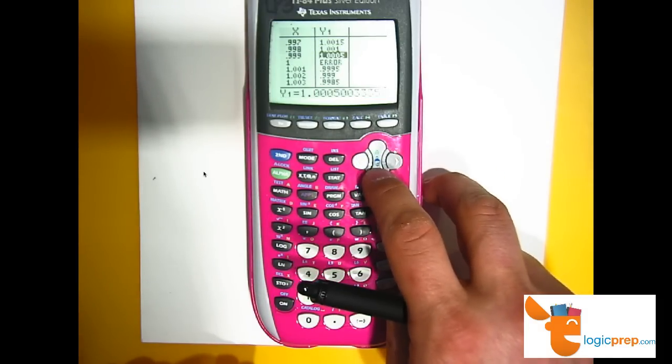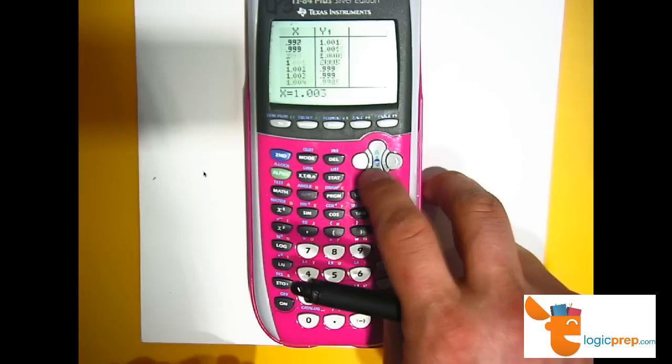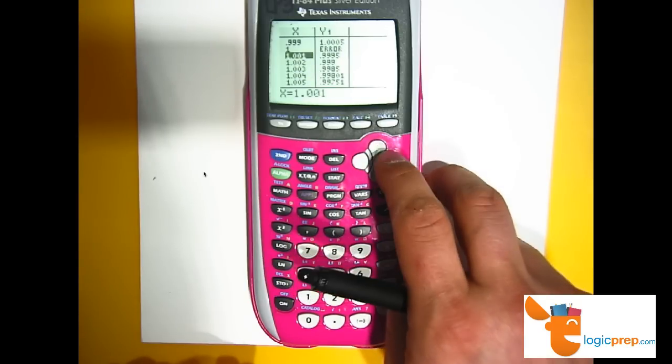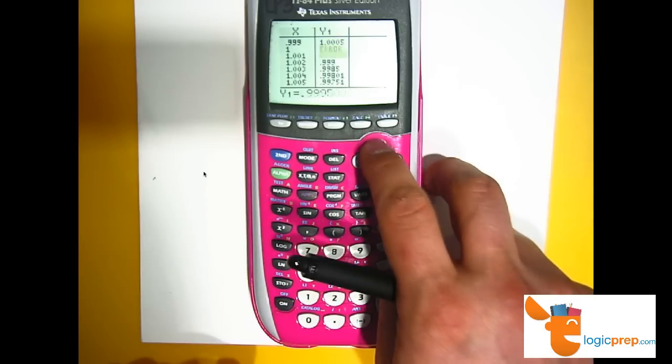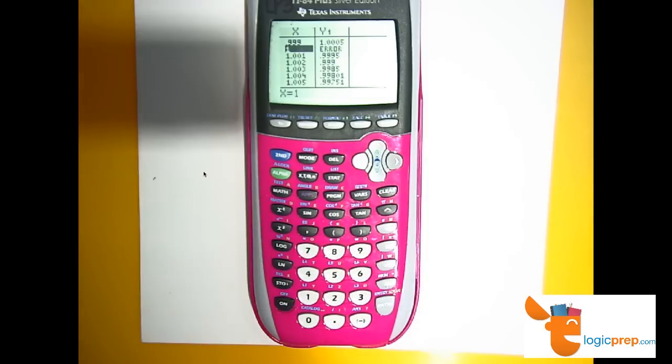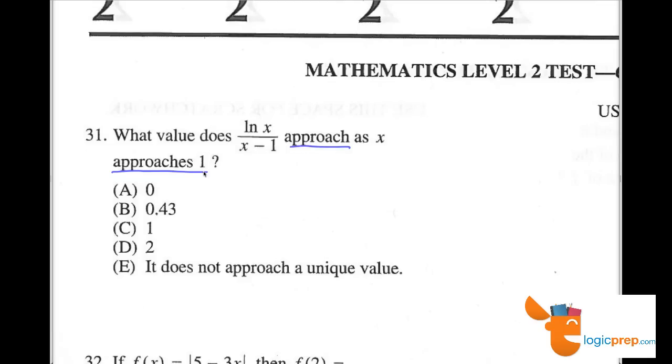And as I go from this direction and approach 1, we can see here that y is going towards 1 but never gets there. So that value, that limit, must have been 1 here. So what value is it approaching as x approaches 1? It's approaching 1, answer C.